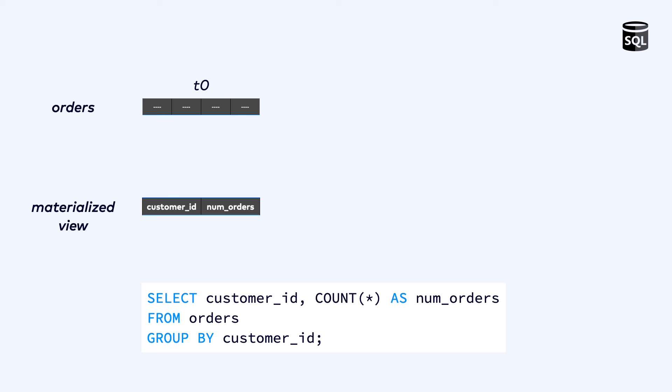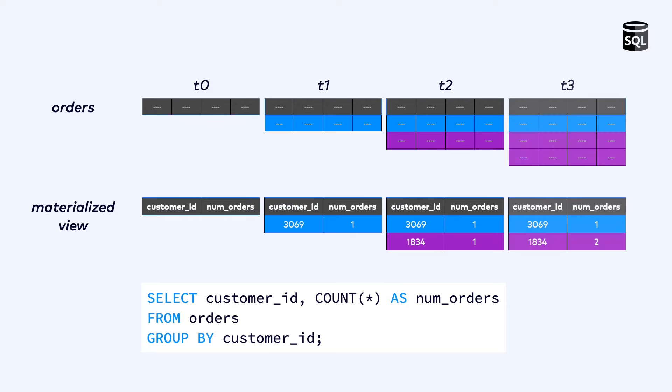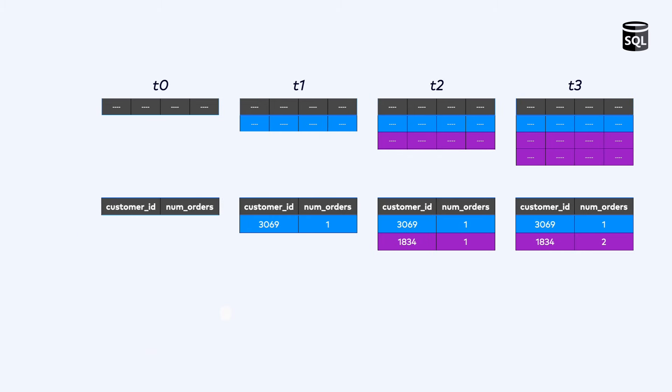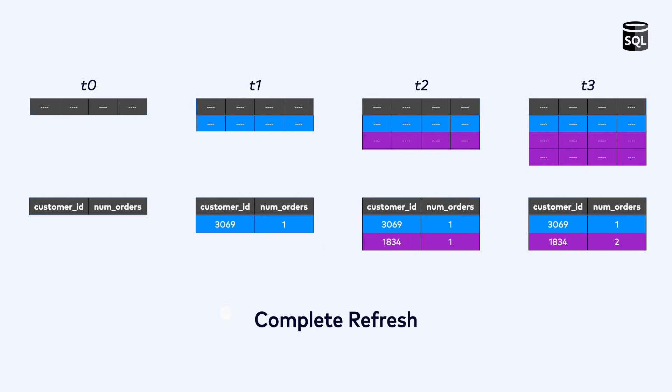And as the underlying orders table is modified, for example by inserting new orders, then the materialized view can update the cache accordingly. The simplest way for a database to refresh a materialized view is to re-execute the query in its entirety after each update. This is expensive, but straightforward. And it's still worthwhile if the view is read more often than it is written. This is the complete refresh strategy for materialized view maintenance.